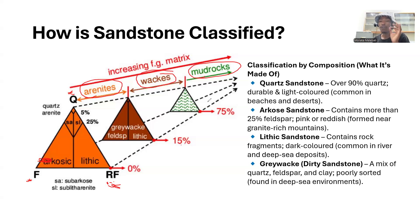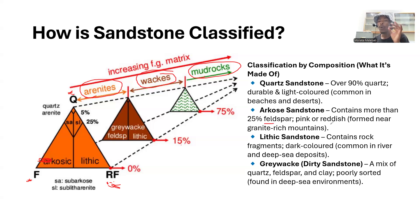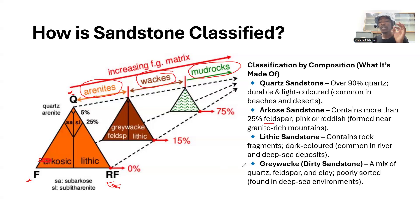Quartz arenite has over 90 percent quartz — it is durable and light colored, commonly found in beaches and deserts. If a clastic sandstone contains more than 25 percent feldspar, pink or reddish in color, it formed near granite ridge mountains — that is an arkose. Lithic sandstone contains rock fragments, is dark colored, and is common in river and deep-sea deposits. Graywacke is a mix of quartz, feldspar, and clay, poorly sorted and found in deep-sea environments.